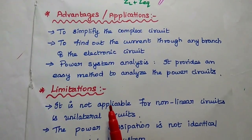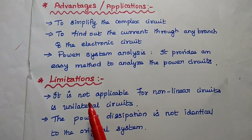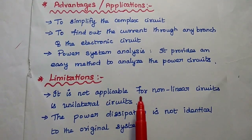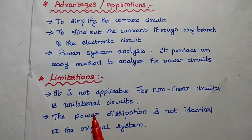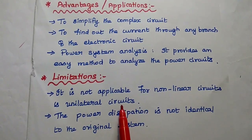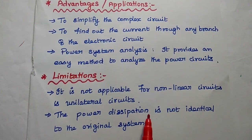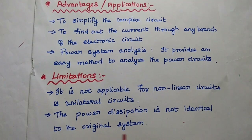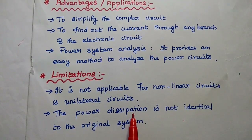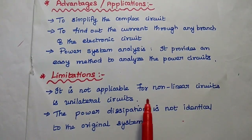The limitations of Thevenin's theorem: as discussed, it is only applicable for linear circuits, not for non-linear circuits, and it is also not applicable for unilateral circuits. Additionally, the power dissipation of the Thevenin's equivalent circuit is not identical to the original circuit, so there may be some deviation in power dissipation — that is also a particular limitation.